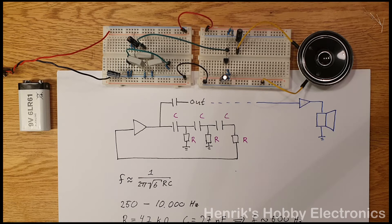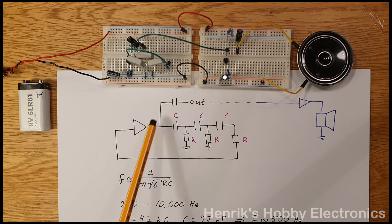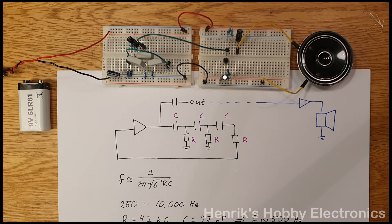Now interestingly this equation is only approximate and what happens in practice is that this DC blocking capacitor here will also affect the resonant frequency as you can listen to here.